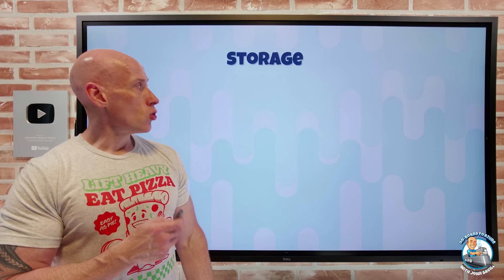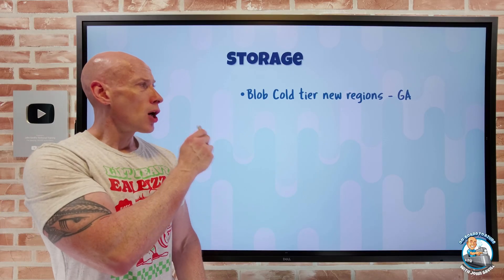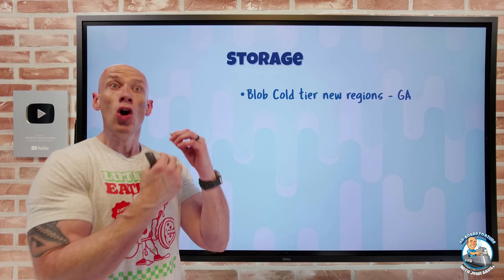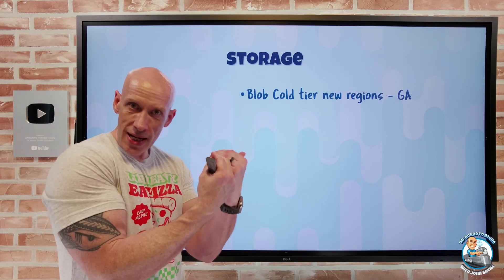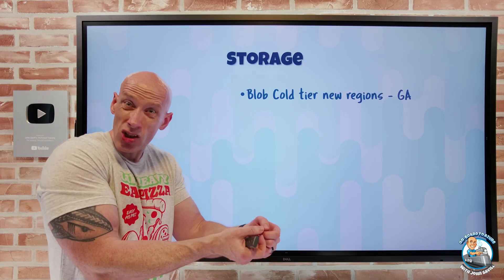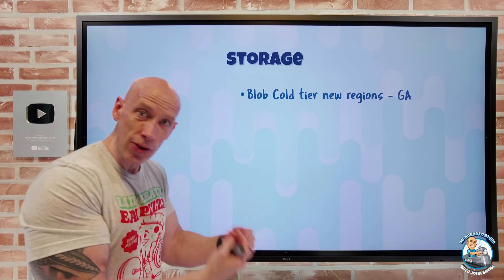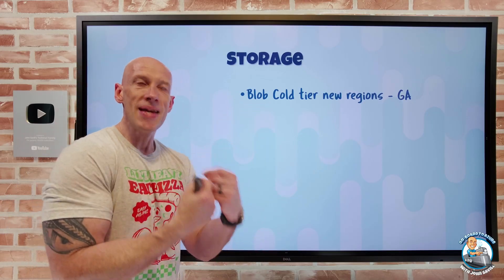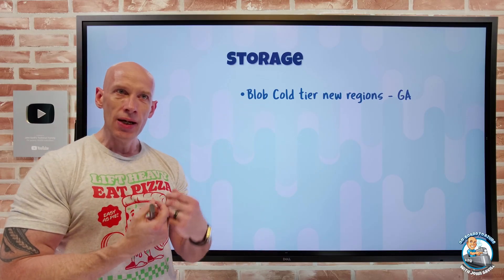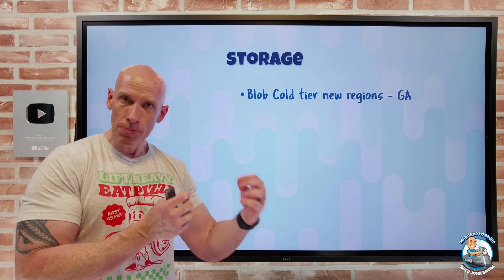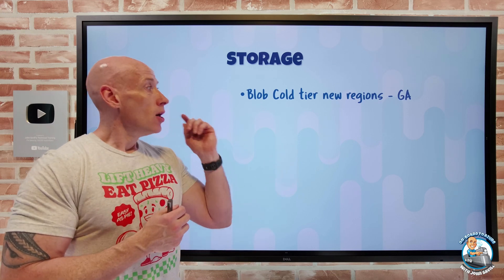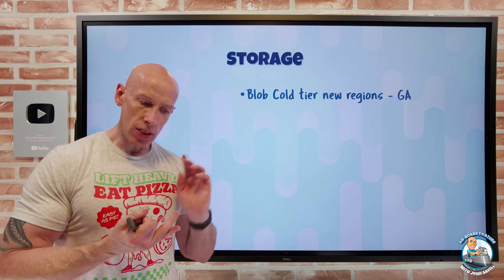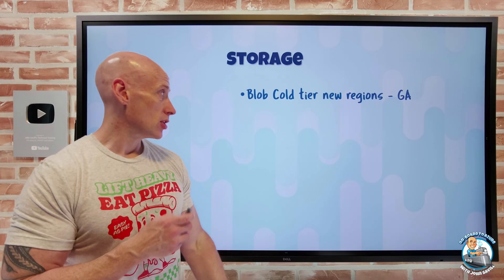On the storage side, the blob cold tier — the cheapest online tier; archive is cheaper but essentially offline — cold gives you the cheapest immediate-access storage for capacity, though you pay more for transactions. It's now GA in Poland Central, Qatar Central, and Azure China regions.